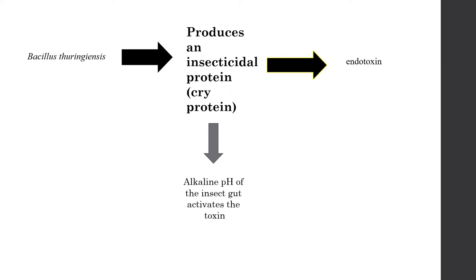Bacillus thuringiensis, that is Bt, is a bacterial species. It has the property of synthesizing a protein with insecticidal properties, and that protein is termed cry protein.